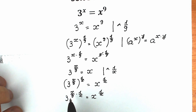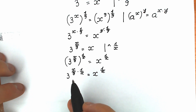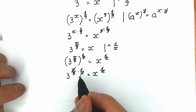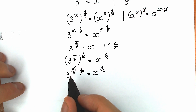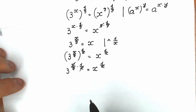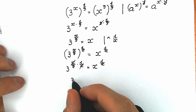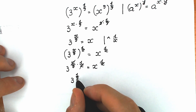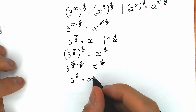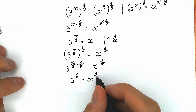If you look closely, we have x in our numerator and x in our denominator, so we're going to cancel this. As a result, we have 3 to the power 1 over 9. So 3 to the power 1 over 9 equal to x to the power 1 over x.